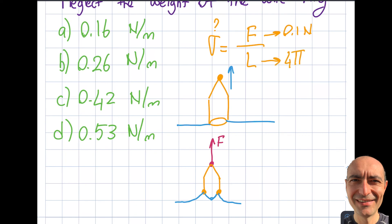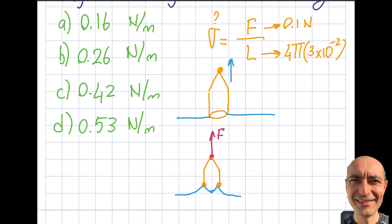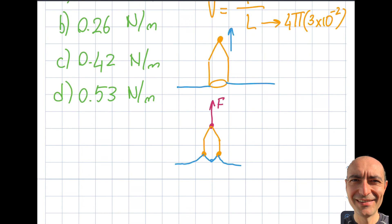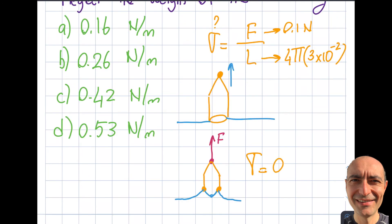This means L will be 4 times π times r, and r is 3 centimeters, so 3 times 10 to the minus 2. If I go ahead and punch this into my calculator, I will get 0.26 newton per meter, and that will be choice b in this particular case. Thank you for watching this video.